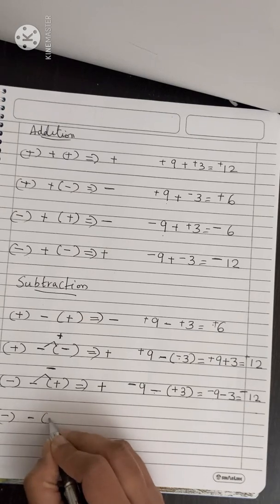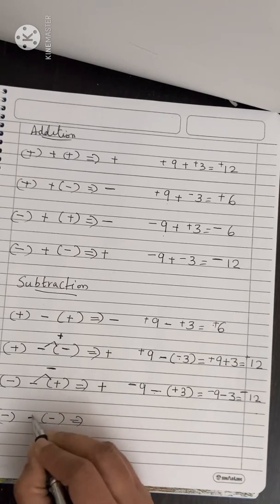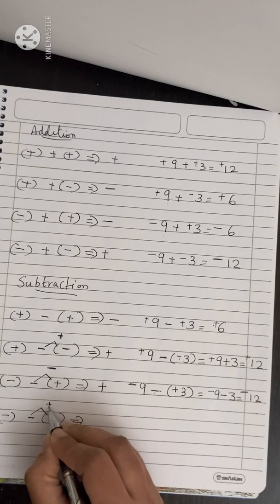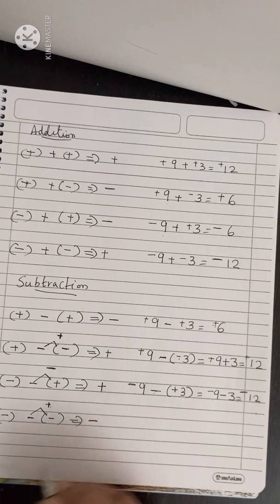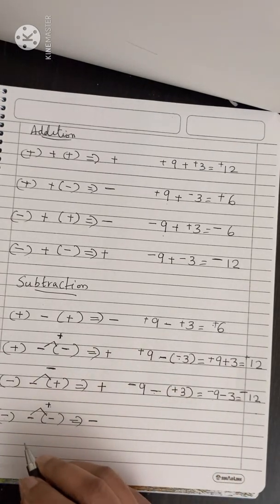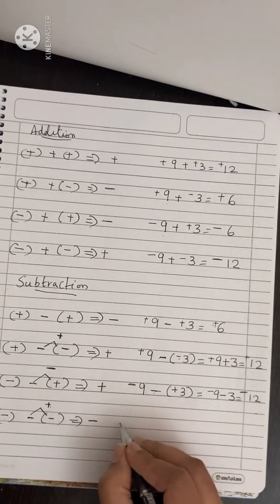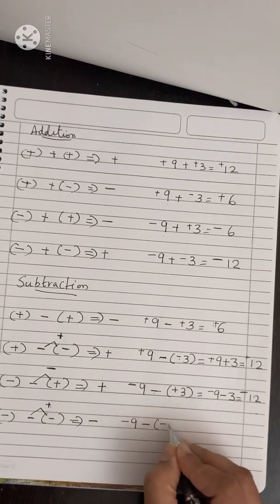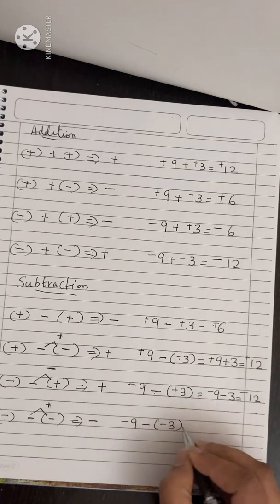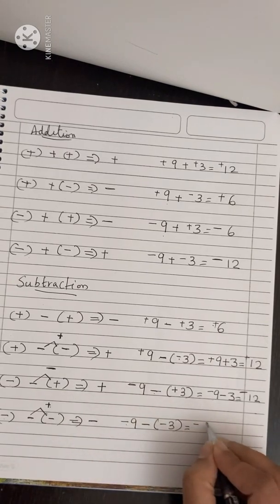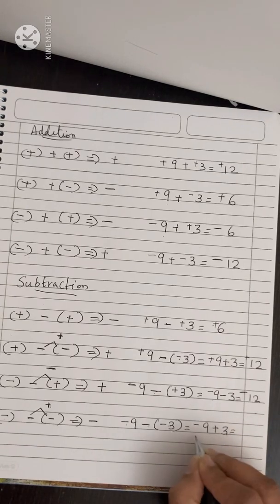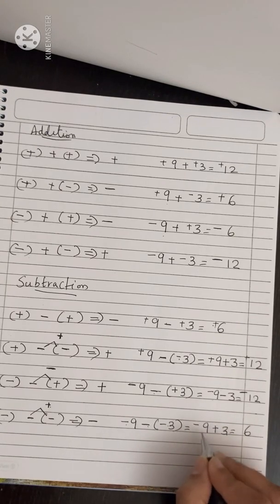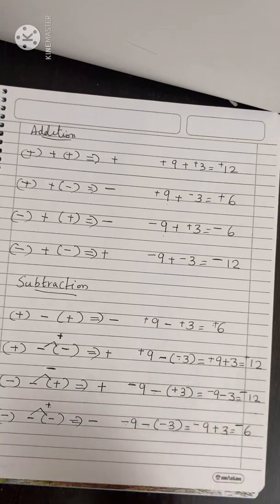Minus minus minus — here minus into minus is plus, so minus and plus come together, and you have to subtract the numbers and put the sign for the greater number. For example, minus 9 minus minus 3 becomes minus 9 plus 3. Subtract: 9 minus 3 equals 6. Since 9 is greater and its sign is minus, put minus — so the answer is minus 6.